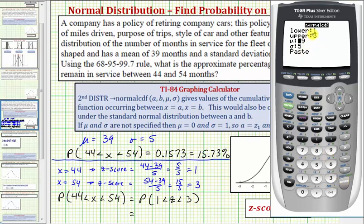So because these are z-scores, we know that mu, the mean, must be zero and sigma, the standard deviation, must be one. And we press enter on paste.